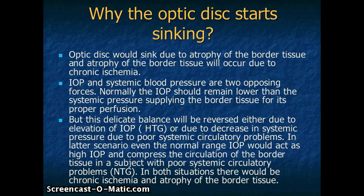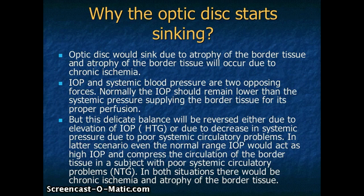This delicate balance will be reversed in two conditions. Either the intraocular pressure is increased due to disease of the eyeball itself, or the systemic pressure supplying the border tissue is decreased due to poor systemic circulatory problems. In the latter scenario, intraocular pressure in the normal range will take the upper hand and act as high intraocular pressure in subjects with poor circulatory problems. Therefore, in both situations, high and normal range intraocular pressure would cause chronic ischemia and atrophy of the border tissue.